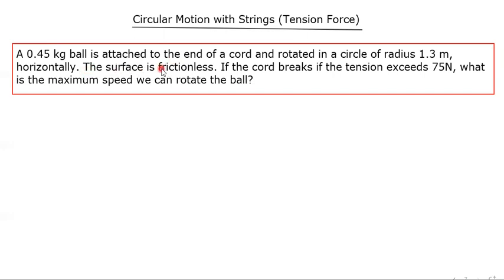Importantly, the surface is frictionless, and we'll also assume that the cord is massless, cannot be extended, and is not elastic. The question asks: if the cord breaks when the tension exceeds 75 newtons, what is the maximum speed we can rotate the ball?